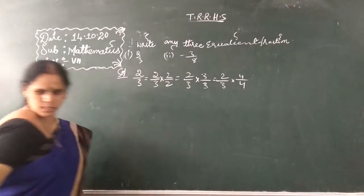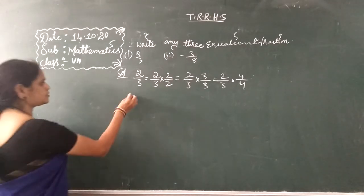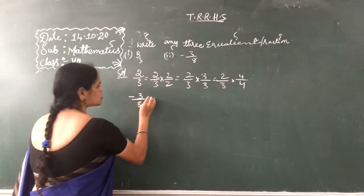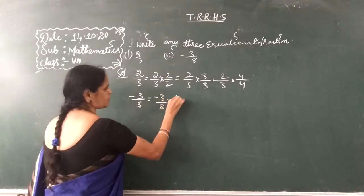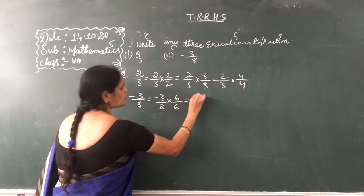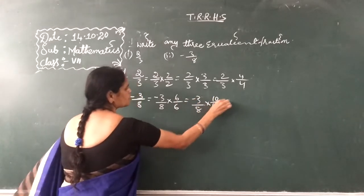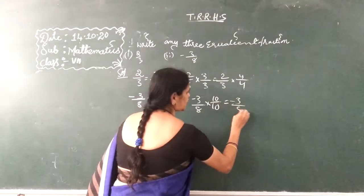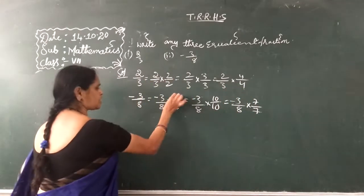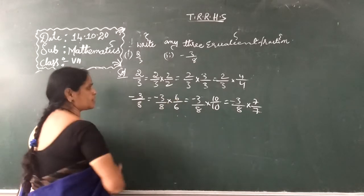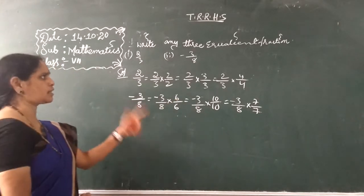For example, minus 3 by 8 — so minus 3 by 8 into 6 by 6, minus 3 by 8 into 10 by 10, minus 3 by 8 into 7 by 7. You can take any numbers, but the rule is multiply and divide with the same number. These types of problems — 2, 3, 4 — are in your textbook, please try.